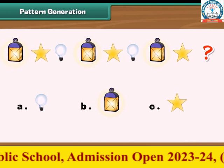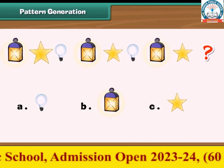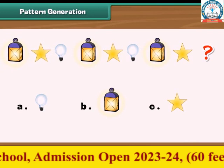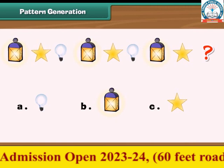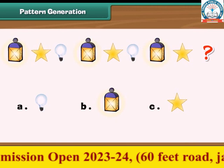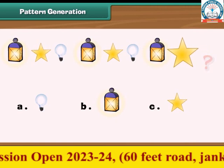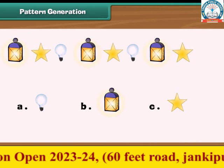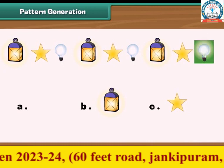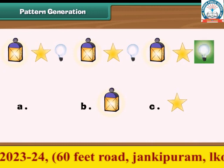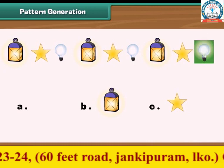First the lantern, then the star, and then the bulb. The given pattern ends with a star, so the next object must be the bulb. So A is the correct option.